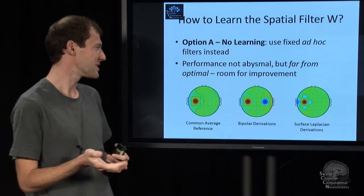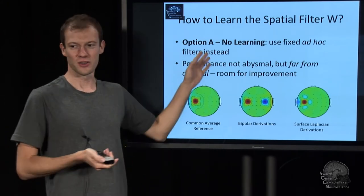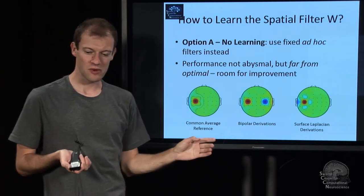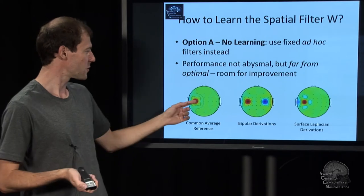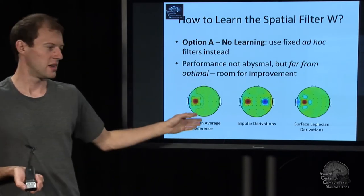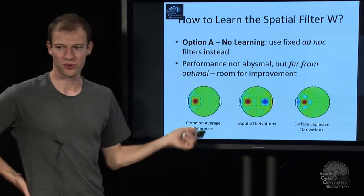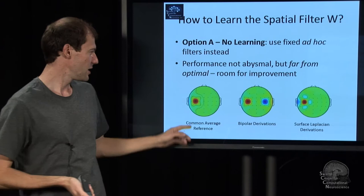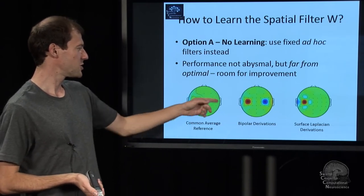And so there's different ways to get that W. And one way to learn it is to just not learn it and assume in advance that we just use some very simple constructed spatial filters. For example, we could say we take a channel and subtract all the others, the average of that. That would become an average reference. We could say we're done. It's just a spatial filter.